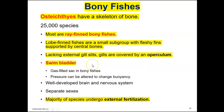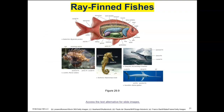Bony fishes have a swim bladder, which helps them with buoyancy in the water. They can fill it up and float higher near the surface, or release air from it and sink further down. Most of them undergo external fertilization — the female lays the eggs and the male sprays sperm over them. Shown here are a lionfish, which is an invasive species, and a seahorse — all bony ray-finned fishes.